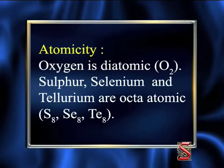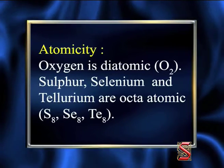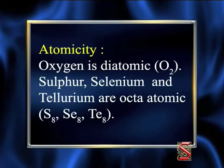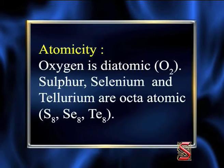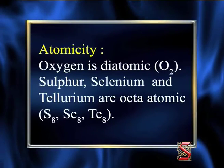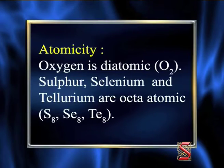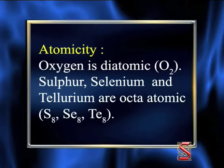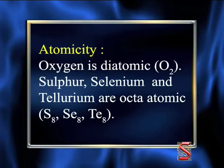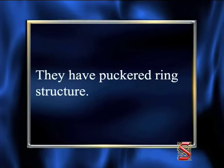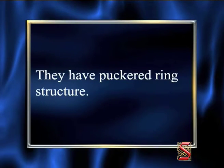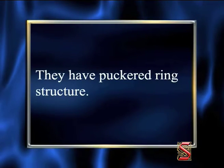Now we shall study the atomicity of chalcogens. Oxygen is diatomic, O2. Sulfur, selenium and tellurium are octa-atomic: S8, Se8 and Te8. They have a puckered ring structure, which is shown here.